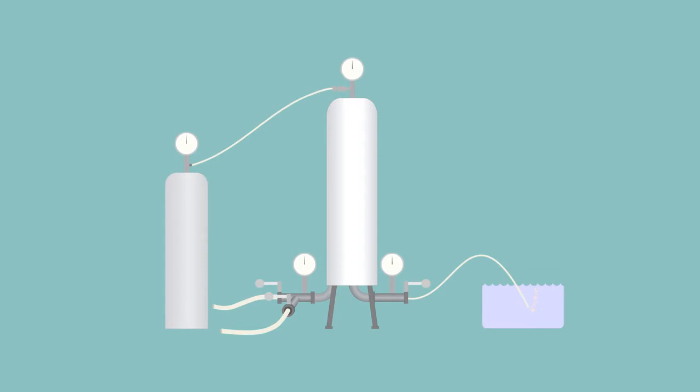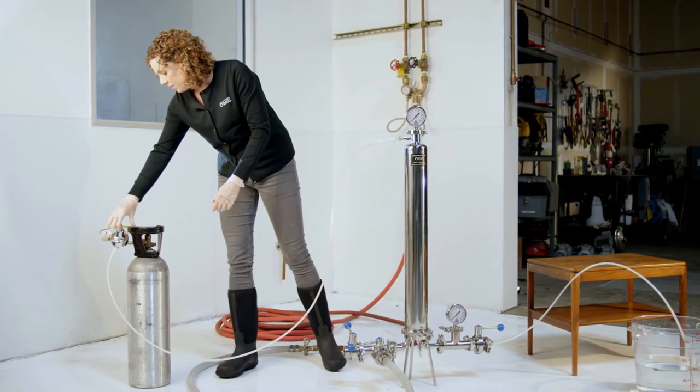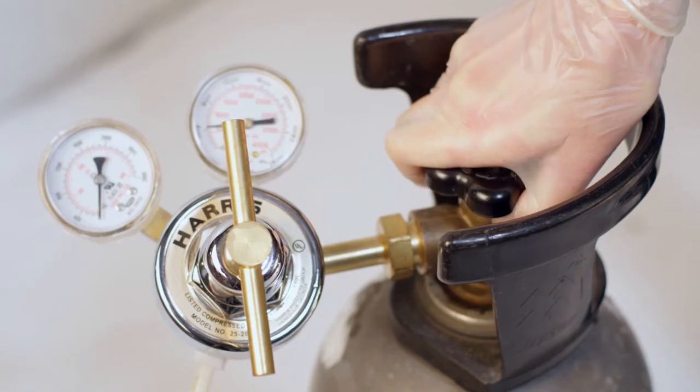One of the key values of membrane filtration is the ability to test the integrity of the filter prior, during, and after use. A common method used in the beverage industry to check gross integrity is the bubble point test. Note, bubble point testing is only feasible on membrane media, and bubble point values may vary between suppliers and brands. Bubble points should only be performed using compressed air or nitrogen.